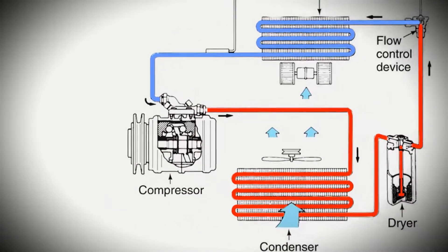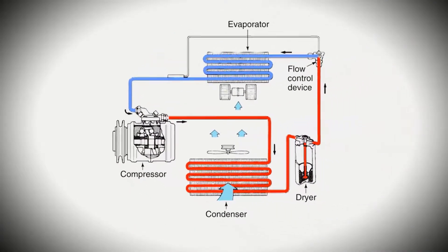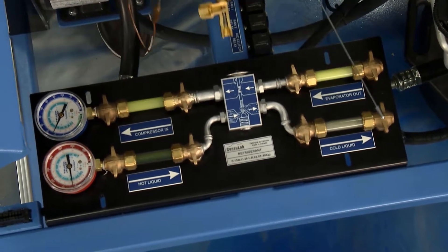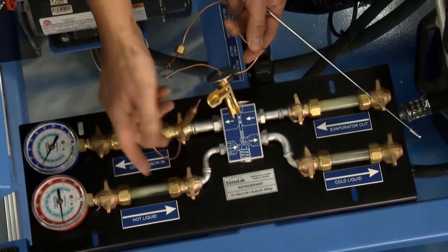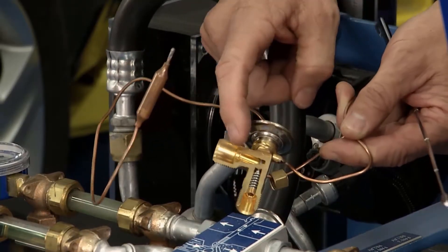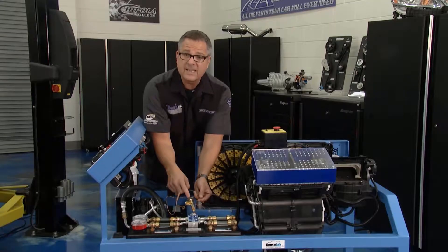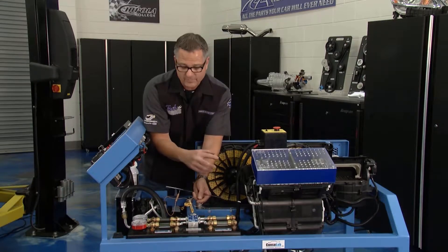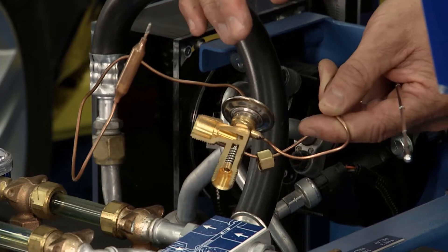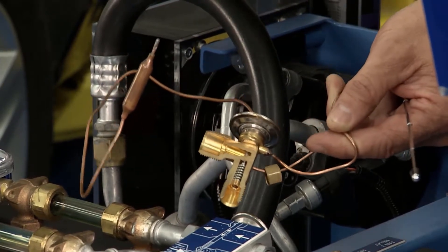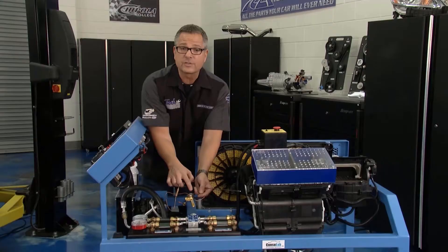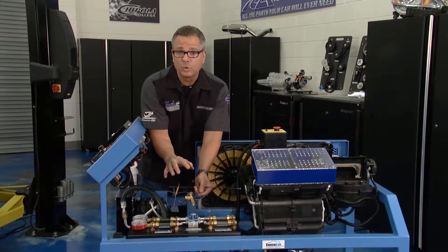The component we're dealing with on our Impala is this H-block, or thermostatic expansion valve. I have a cutaway right here so you can actually see it. On the top is a sensing ball that lets the valve open and close. If it's really cold in there and the evaporator is getting cold, it's supposed to close and stop refrigerant flow. If it's hot in there, the sensing ball allows it to open up and let the refrigerant flow through, cooling the car down.